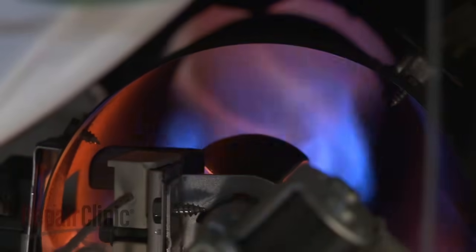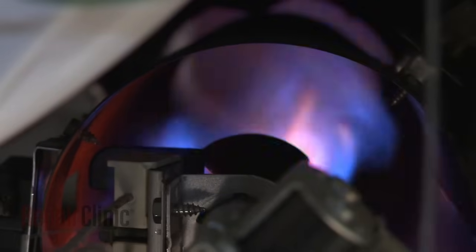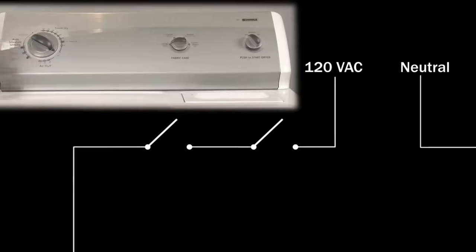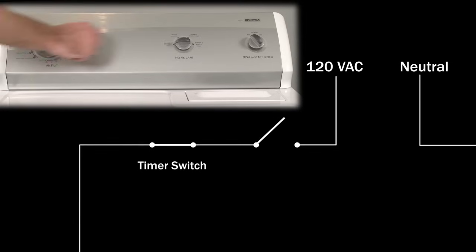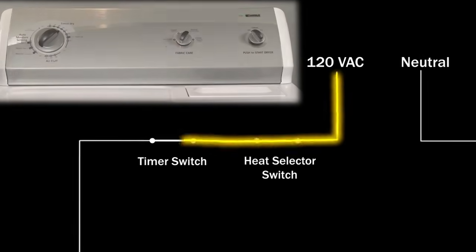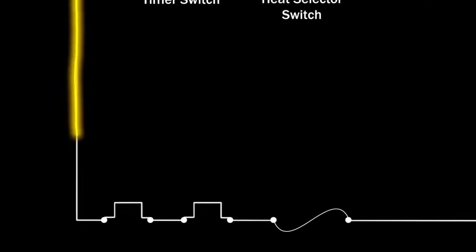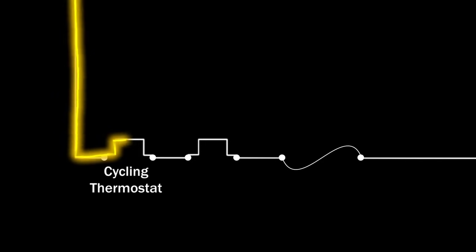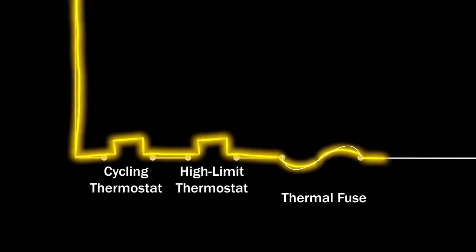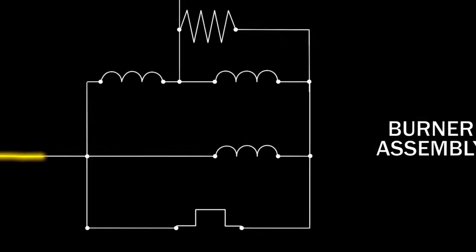As we mentioned earlier, the air inside the dryer is heated by the burner. The burner is energized by a standard 120 volts of alternating current when the timer and heat setting are selected on the dryer control panel and the start switch is activated. The voltage passes through the cycling thermostat, the high-limit thermostat, and the thermal fuse, if applicable to the model, on its way to the burner assembly.